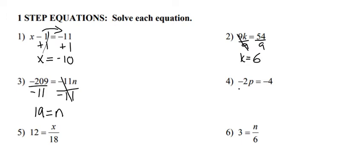For number 4, we have negative 2p equals negative 4. We're going to divide each side by negative 2 in order to get p by itself, and we get that p equals positive 2.